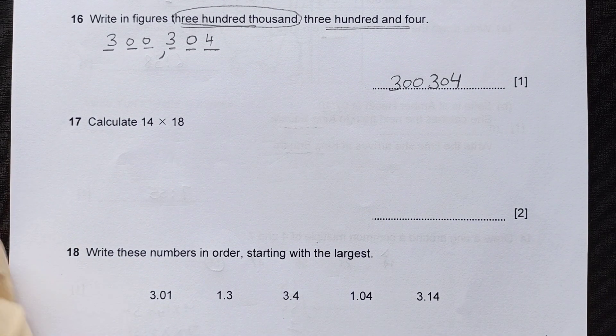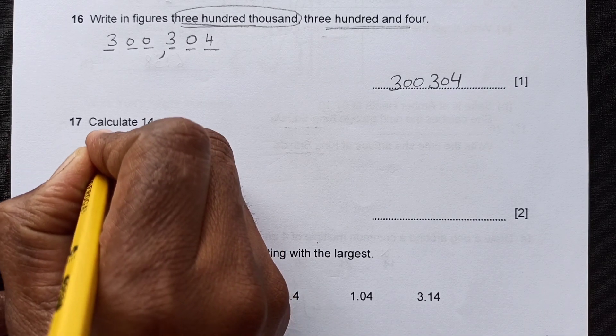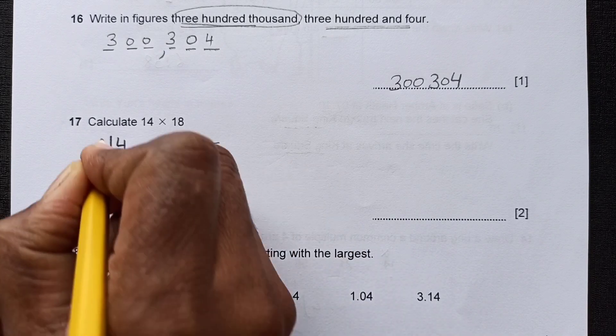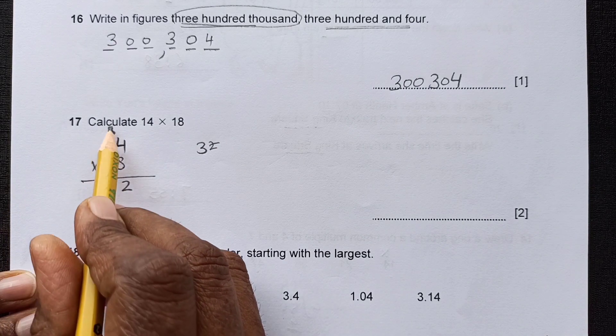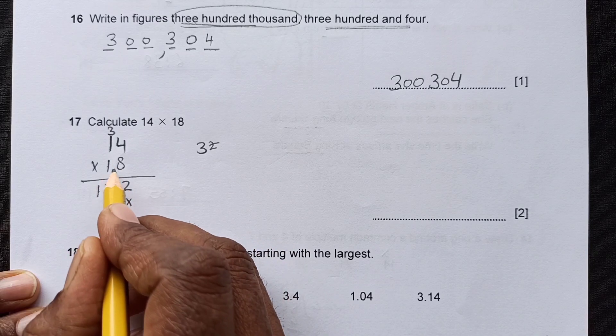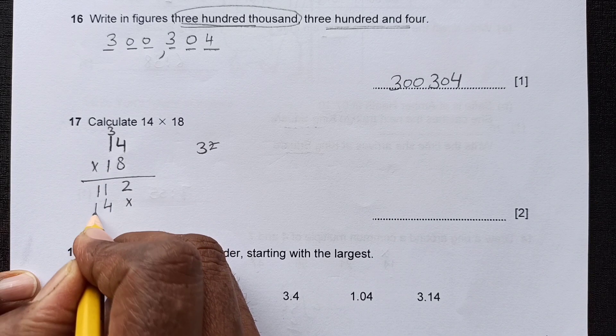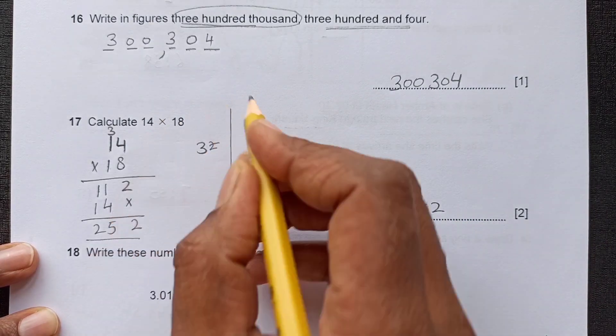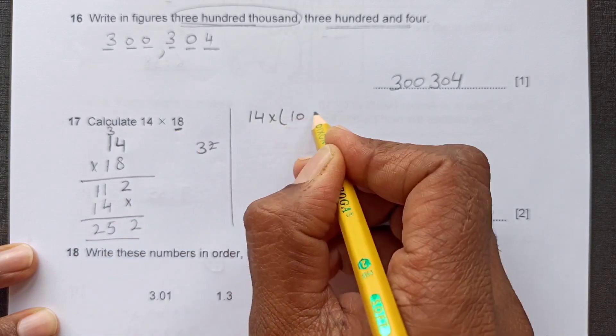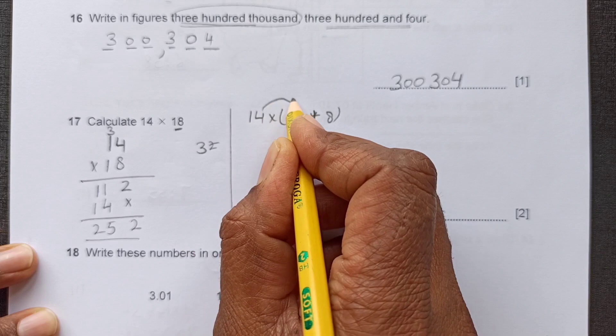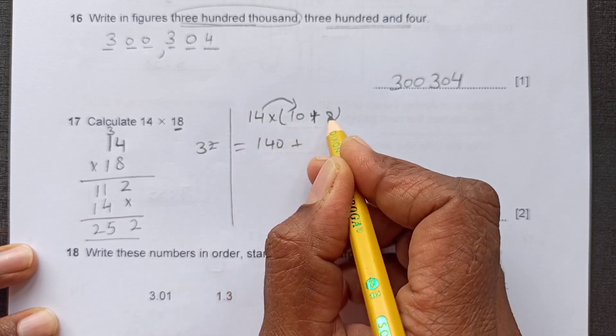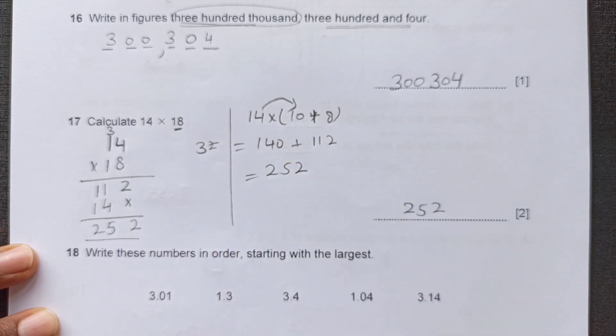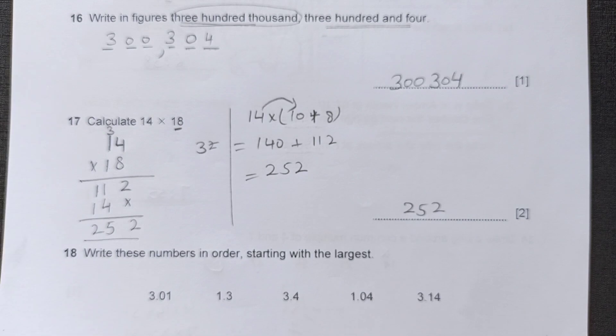Now calculate 14 times 18. There are two methods. You can directly multiply here. 4 times 8 is 32, 2 will go here, 3 goes up. 8 times 1 is 8, plus 3 is 11. So this one, the second row. 14, 4 times 1, 1 times 1. So it is 2, 5, and 2. So 252 is the answer for this one. Or you can even use it like 14 times 18 can be written as 14 times (10 plus 8). So then it will be 140, 14 times 10, plus 14 times 8. 14 times 8 is 112. So when you add this, it also gives you 252. You can use any of the methods, whichever you feel comfortable with.